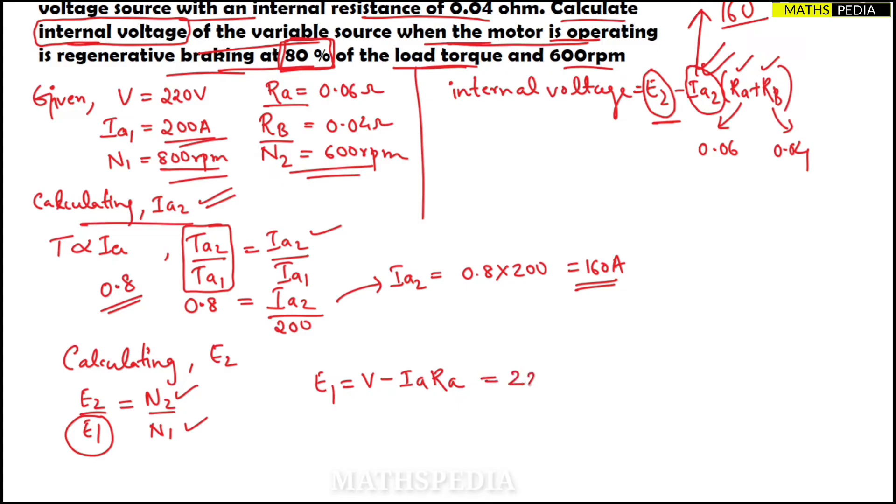E1 = V - Ia·Ra where V is given as 220 volts minus Ia value which is 200 amps, the armature current, times armature resistance 0.06.